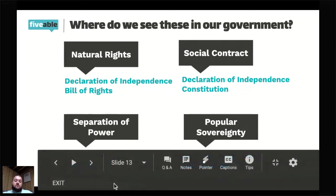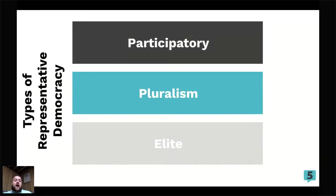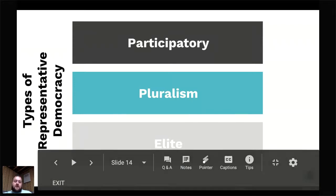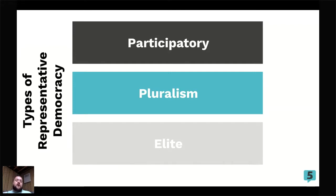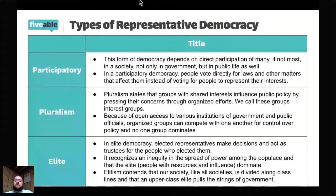Those Enlightenment thinkers have had a profound impact on our government, and you will see them again and again as we go forward. The last thing we're going to cover tonight are the types of representative democracy. Political scientists theorize that under the umbrella of democracy there are really three different types: participatory, pluralism — or hyper-pluralism — and elite theory, or elitism.